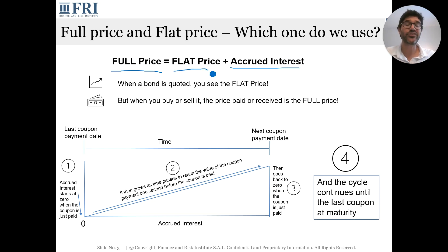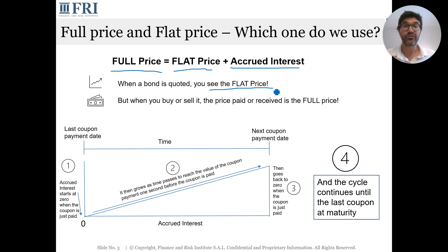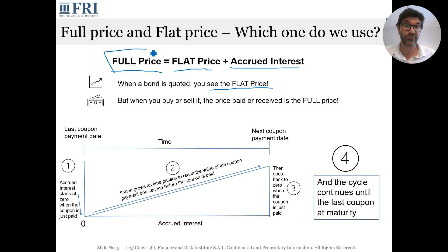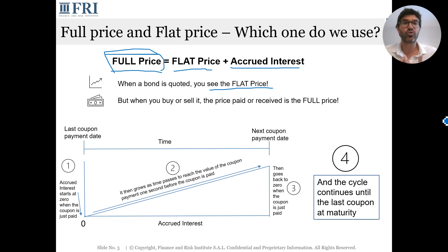The flat price is simply the full price minus accrued interest. Something quite confusing for many CFA candidates: when you quote a bond — when you see the price on a screen — it is generally quoted at the flat price. But when you decide to buy the bond, you pay that flat price plus any accrued interest to the current holder. So you always end up paying the full price, also called the invoice price.